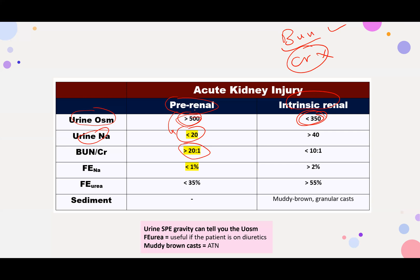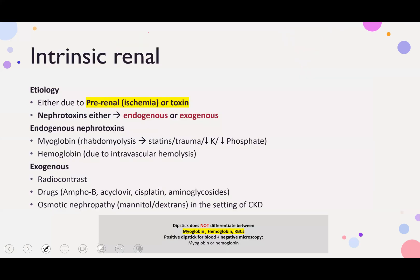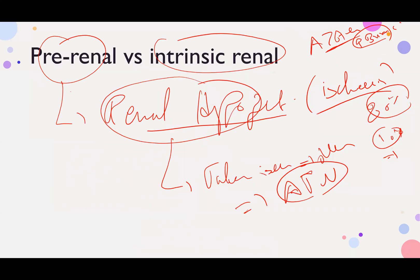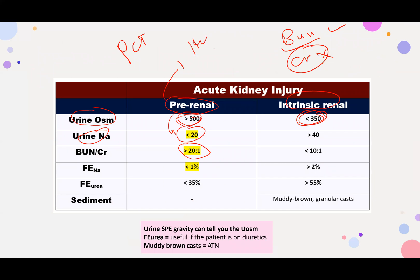Creatinine is not reabsorbed, but BUN is reabsorbed in the proximal convoluted tubule (PCT). During pre-renal, the PCT reabsorbs water and sodium, and BUN passively follows into the peritubular capillaries back into the blood. The main pre-renal cause is hypovolemia, dehydration, or reduced renal perfusion, so the kidneys retain everything they can.